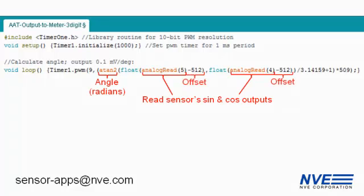We assume the outputs are centered around half the supply and normalize the output for 5 volts full scale, or 0.1 millivolts per degree after the voltage divider.